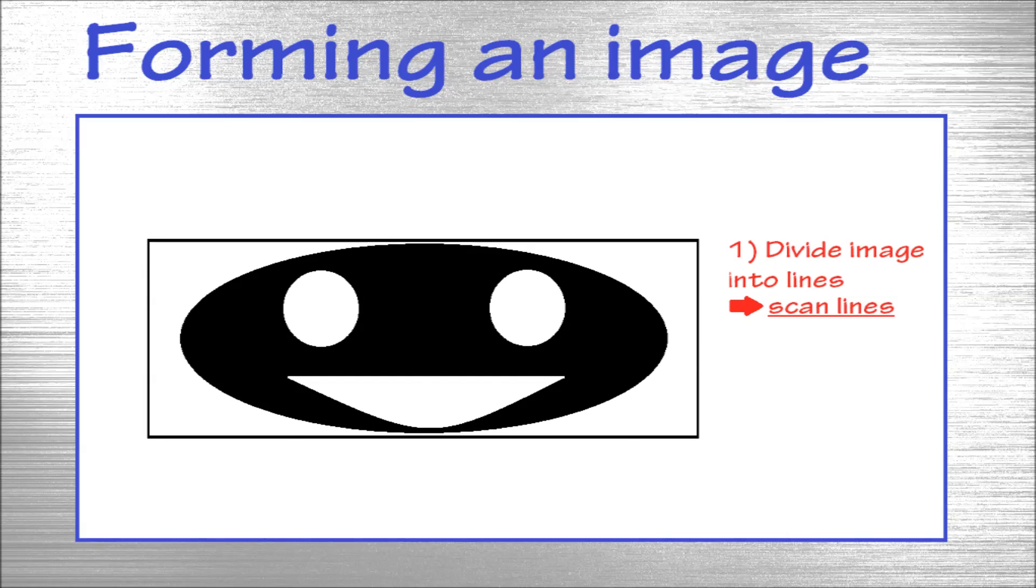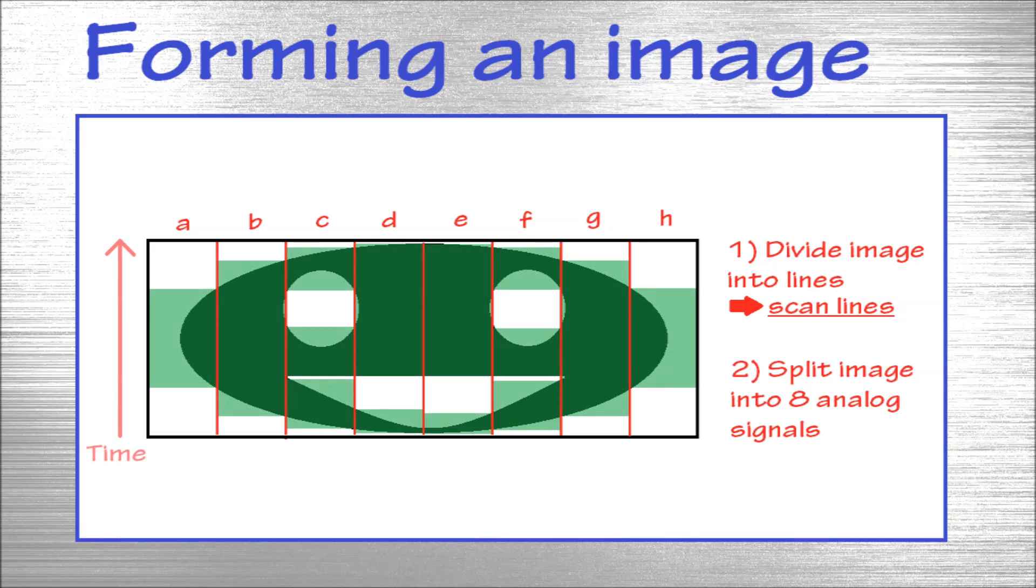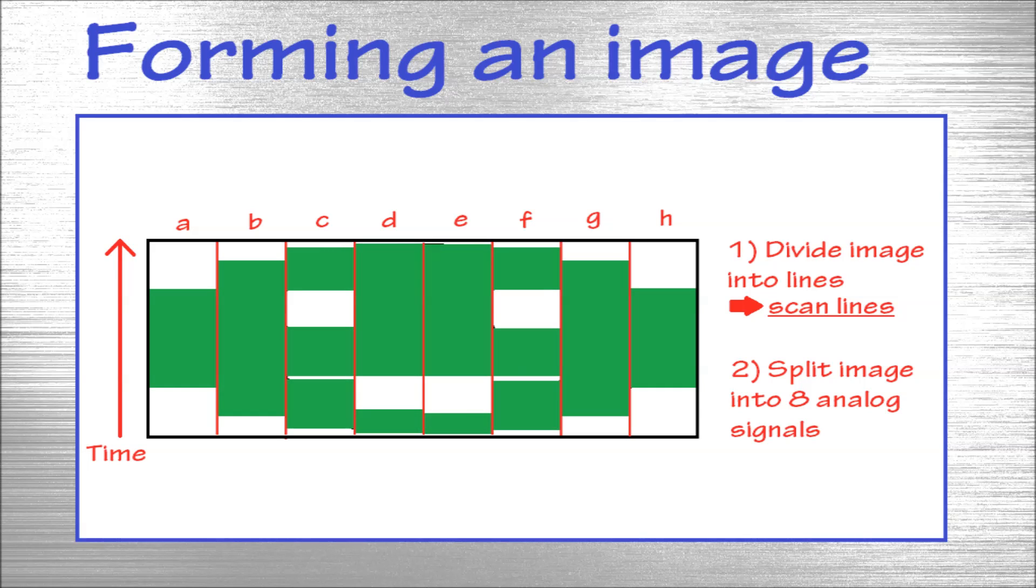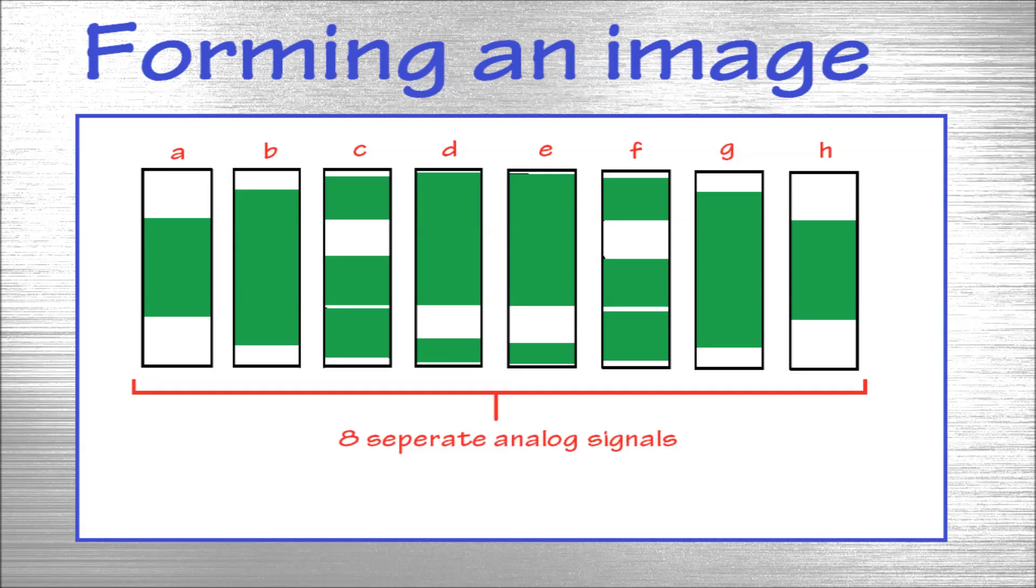I've also divided the image into 8 lines. Each letter represents one analog signal for each line. Each signal changes in time. With each line having its own signal, we've got 8 separate signals. Let's take a look at one line in detail.